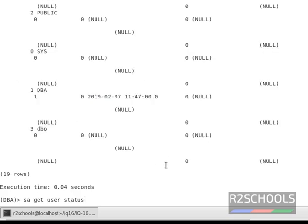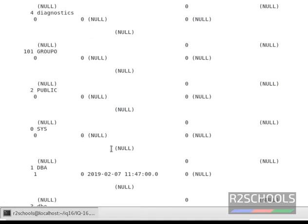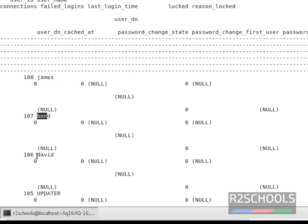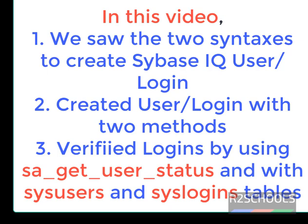Another way to verify whether a login has been created or not is using sa_get_user_status. Notice here there are 19 rows — we have created james, bond, and david. So in this video we have covered two different syntaxes to create a user in Sybase IQ, and we have verified the login using the sa_get_user_status command and also using system tables: sys.users and sys.logins.